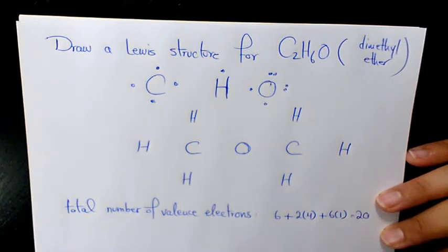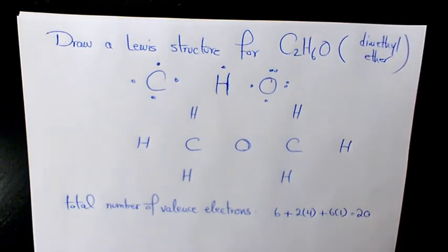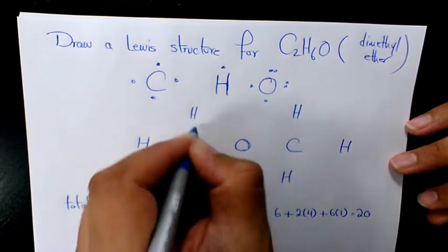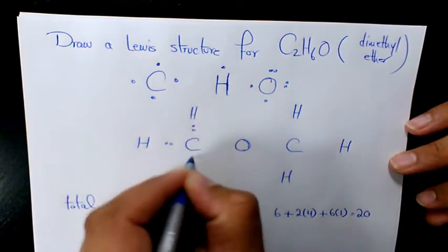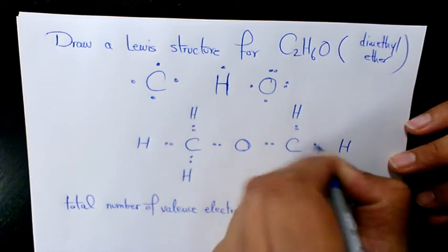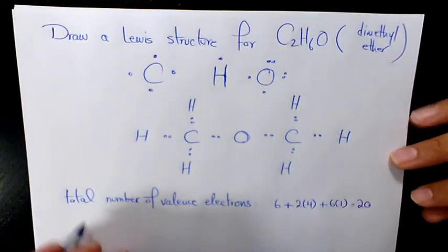Now what we can do is place one pair of electrons between each adjacent pair of atoms. Every two of these dots represents a bonding electron pair that forms a single covalent bond. So we count: one two, one two, one two, one two, one two, one two, one two, one two.